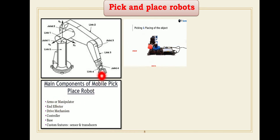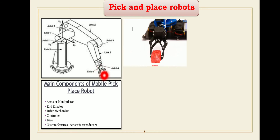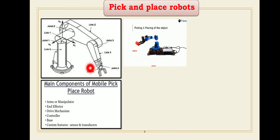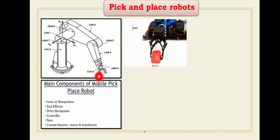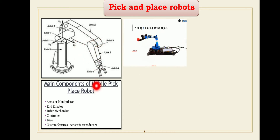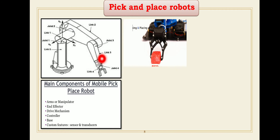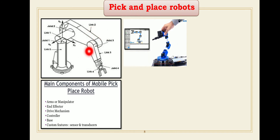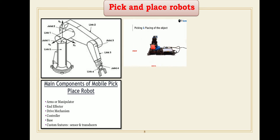The second component is the end effector, which is the hand of the robot directly connected to the last joint. The third component is the drive mechanism — different types of electric motors act as the drive, with the basic function of actuating all joints of the robot. The fourth component is the controller, which provides overall control of the manipulator and arm. The fifth is the base, which acts as a foundation. Finally, sensors and transducers sense all parameters and convert them into voltage or current signals.